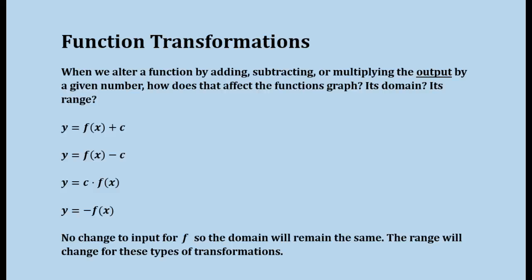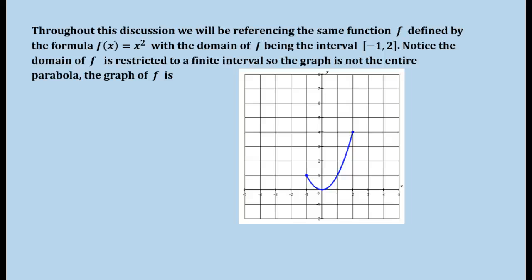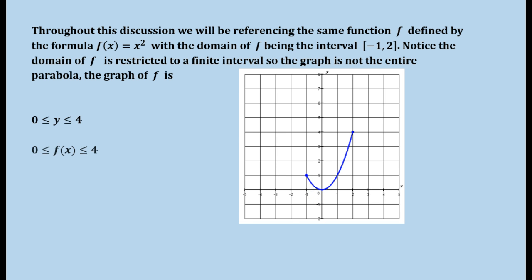We're going to see what effect that has on the graph and then also on the corresponding range. Throughout this video we're going to focus on this function: f(x) = x², restricted to the interval from negative 1 to 2. It's easier and more direct to see what happens to the range in the graph when we look at a finite interval. The lowest point on our graph is at (0, 0), the highest point is at (2, 4), so the range of our function is the closed interval from 0 to 4.